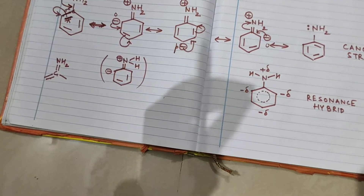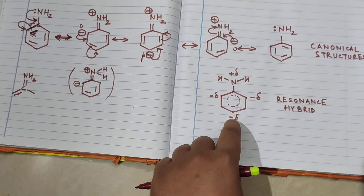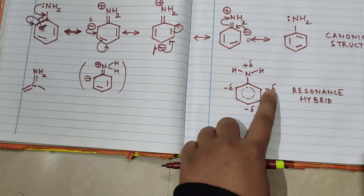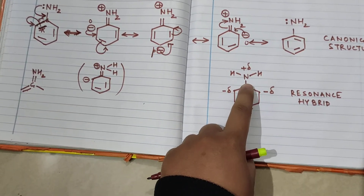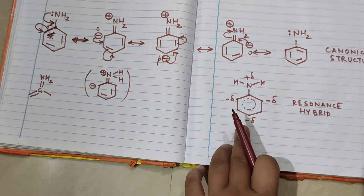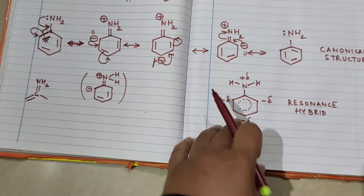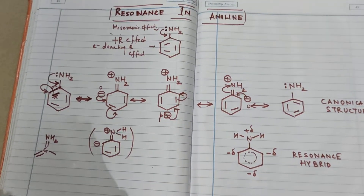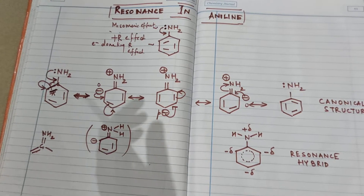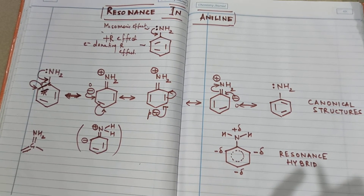In resonance, we draw a resonance hybrid. Looking at the charges, they appear on ortho and para positions, meaning that when an NH2 group is attached to the benzene ring, it increases the charge density — or electron density — on ortho and para positions. Nitrogen carries a positive charge in the resonating structures. The resonance hybrid represents the properties of all four or five canonical structures. There is a difference in energy between the canonical structures and the resonance hybrid, which means aniline is moving towards stability through resonance.